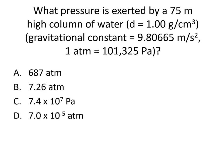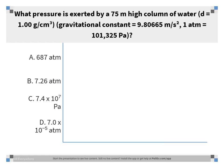Here's a question for you to try. You're using the equation p = hdg to find the pressure in a barometer, given the height, density, and gravitational constant. The correct answer is B, 7.26 atmospheres.